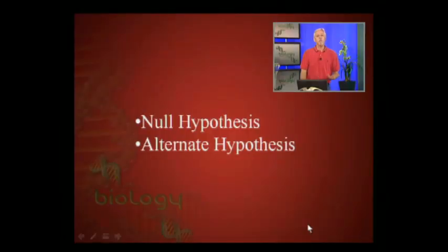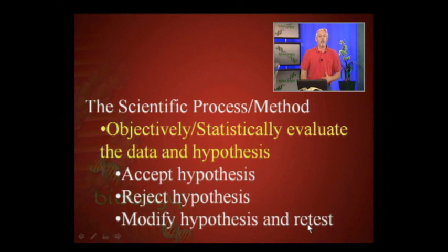We can also break down our ideas into null and alternate hypotheses. The null hypothesis states that the difference in our groups is due to chance, while the alternate hypothesis states that the difference is due to a cause. If we have at least 95% confidence in our results, we reject the null hypothesis and accept the alternate hypothesis that there is a cause for the difference. Once we have objectively and statistically evaluated our data, we can either accept our hypothesis, reject it, or modify and retest it.